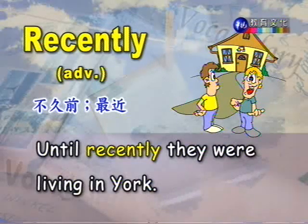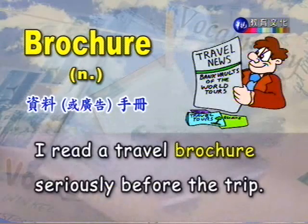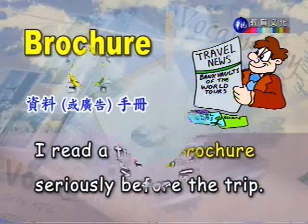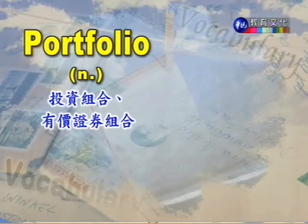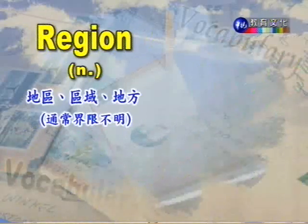Brochure，名词，资料、广告手册、介绍册。例句：I read a travel brochure seriously before the trip. 我在旅行之前认真地读旅游手册。Portfolio，名词，投资组合、证券组合，也有工作集、作品集的意思。例句：Do you understand the investment portfolio you bought clearly? 你真的很清楚了解你购买的投资组合里面的内容吗？